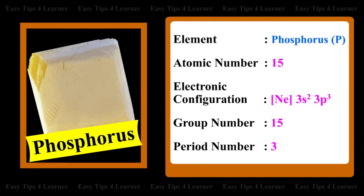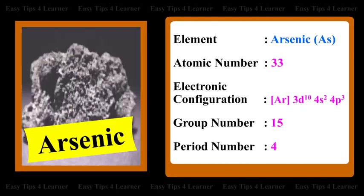For the element phosphorus, the atomic number is 15 and the electronic configuration is [Ne]3s²3p³. The group number is 15 and the period number is 3. For arsenic, the electronic configuration is [Ar]3d¹⁰4s²4p³. The group number is 15 and the period number is 4.